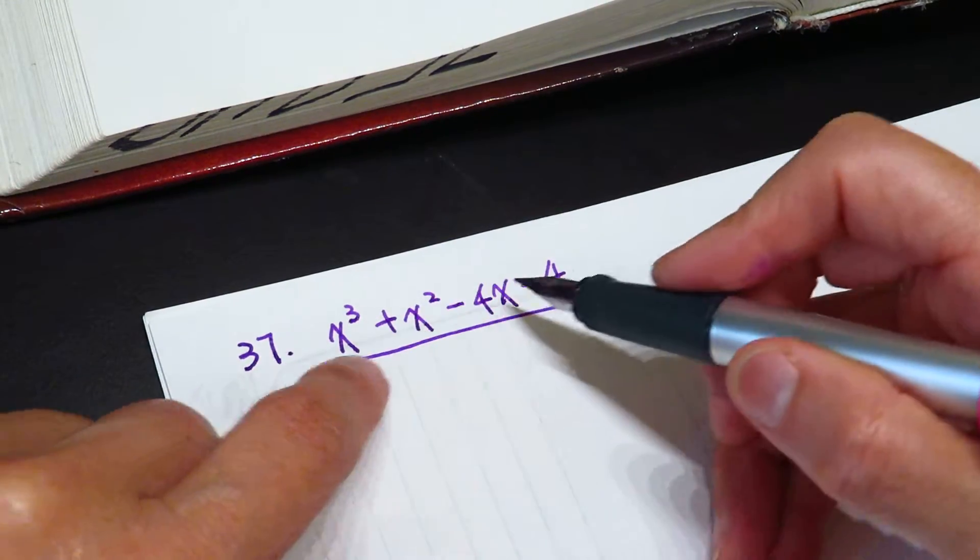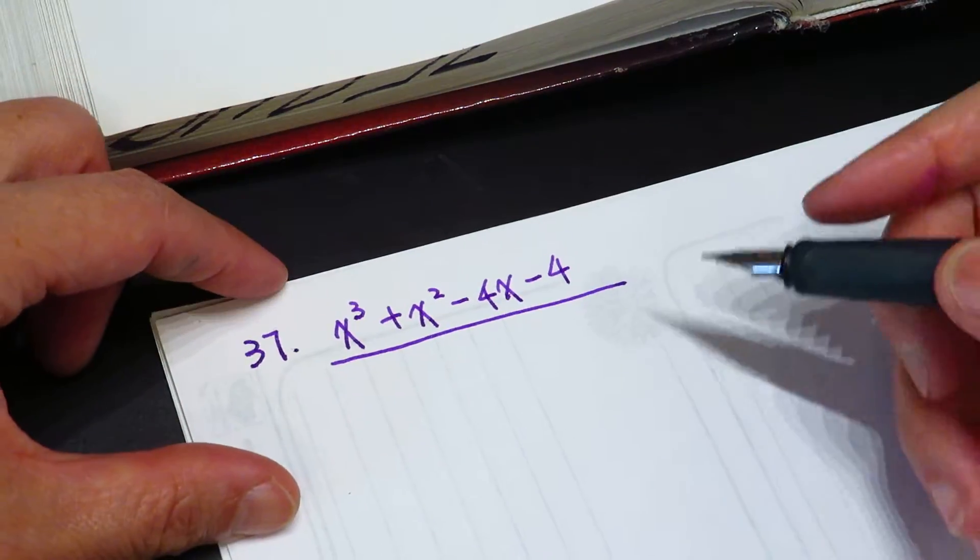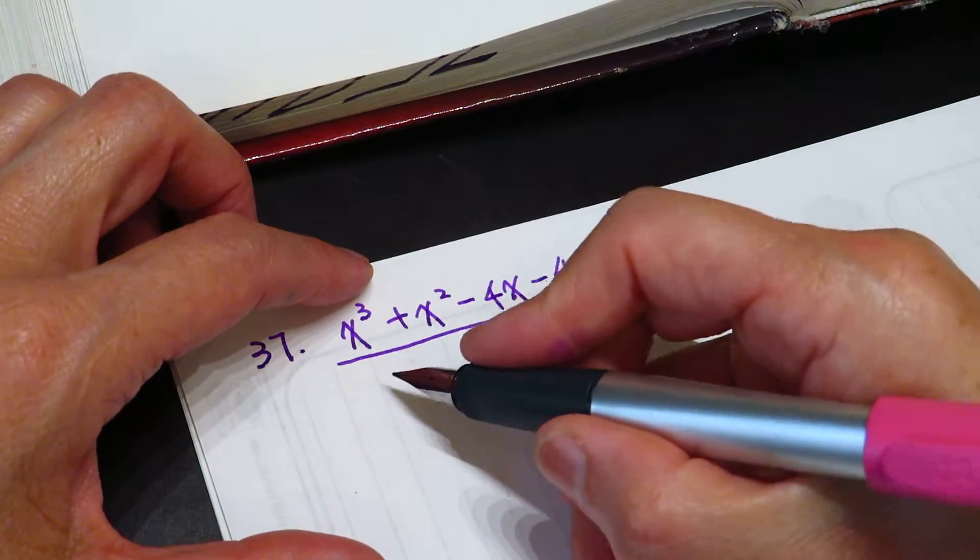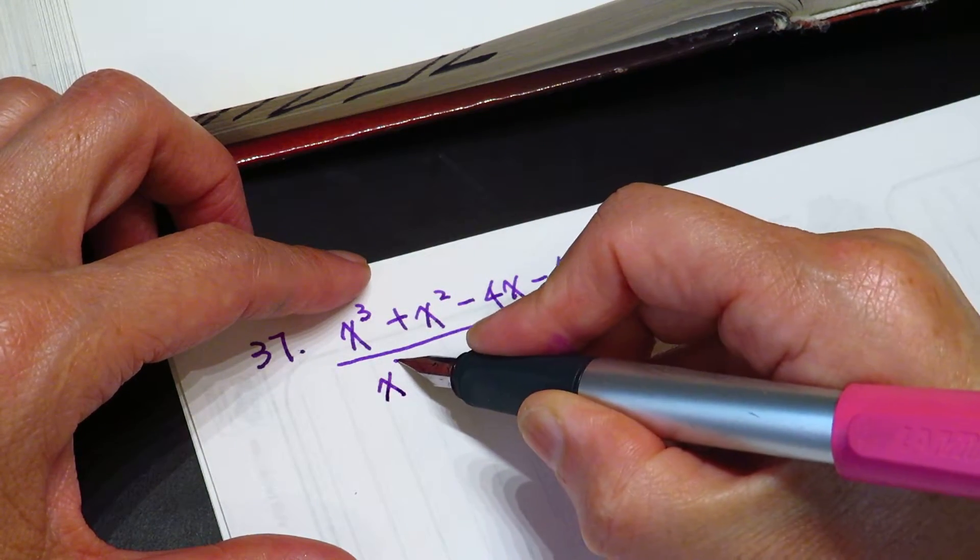x plus 1 here has negative 4 times x plus 1. Okay, that's easy peasy lemon squeezy. Okay, x square